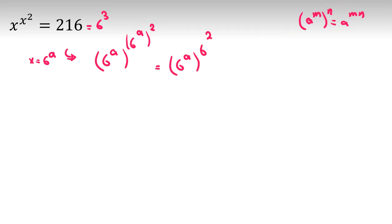So it is 6 to the a. And again, you multiply these two things. It will be 6 to the a times 6 to the 2a, which equals 6 cubed. Why 6 cubed? 216.